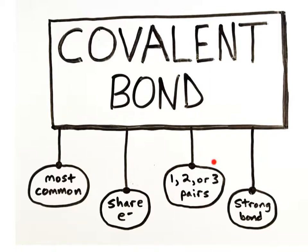One, two, or three pairs of valence electrons can be shared in a covalent bond. Compared to ionic bonds, covalent bonds are the stronger bond. The more electron pairs that are shared between the atoms, the stronger the bond.